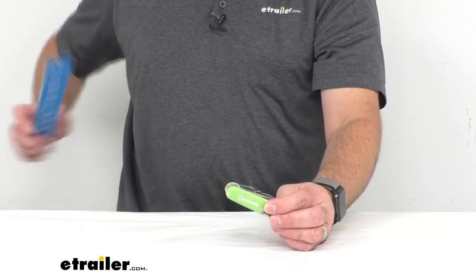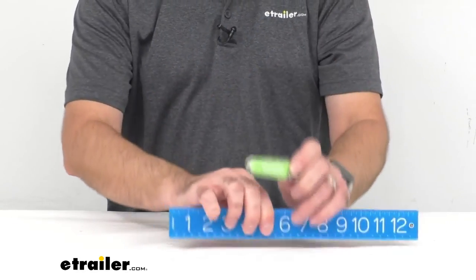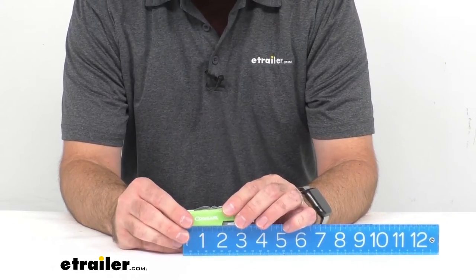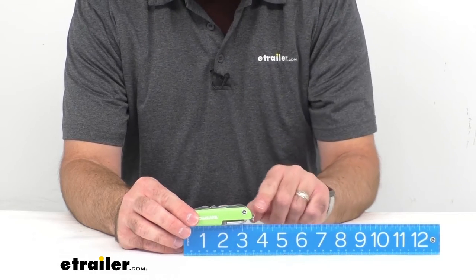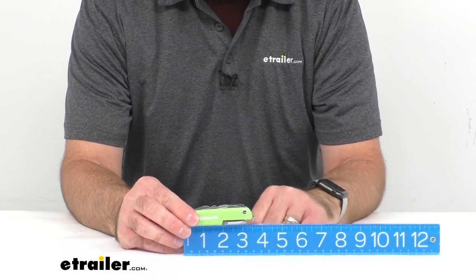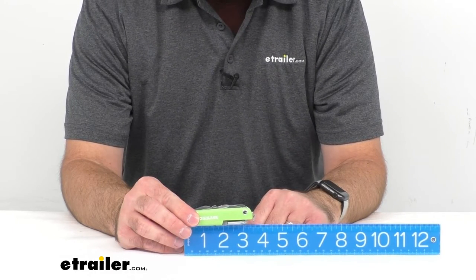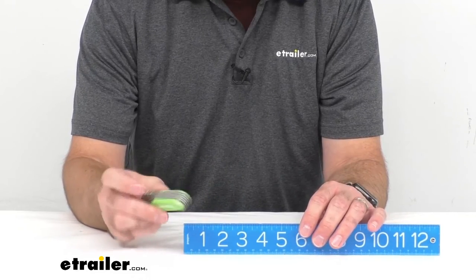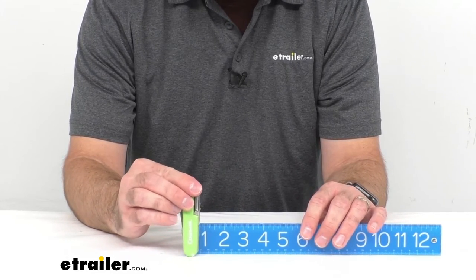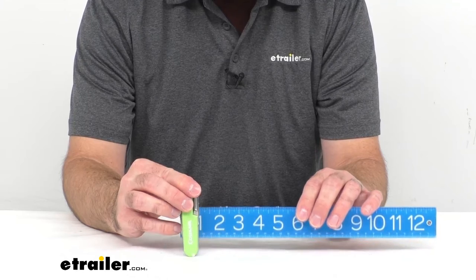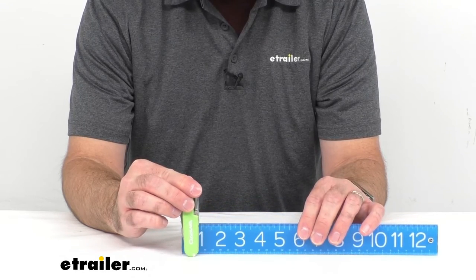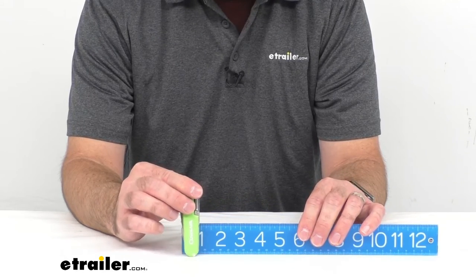Just to give you an idea of the measurements here, the overall length of this knife, including the key ring coming out here a little bit, is sitting at about three and a half inches long, and the width of this knife is right at about an inch in width. So it gives you an idea of the size.